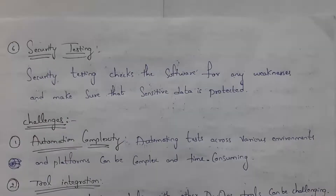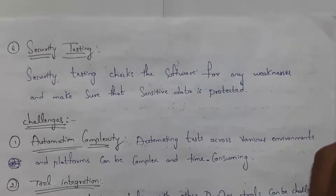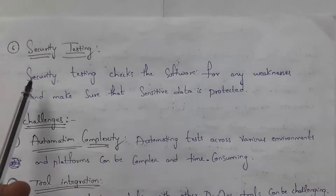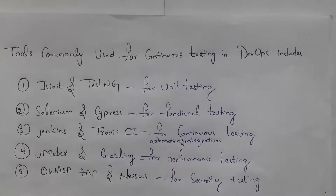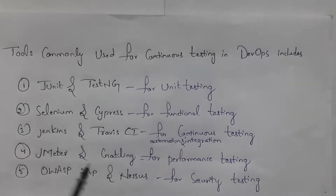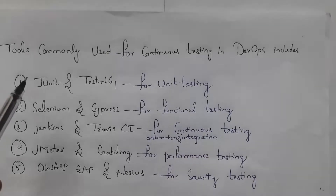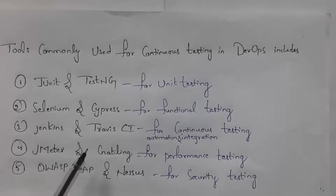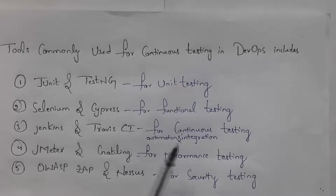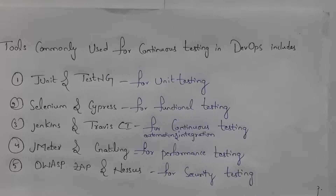The last type is security testing. After developing software, it is given to hackers to attempt to hack it — if there is any weakness, the hacker can exploit it. Security testing checks the software for any weaknesses and makes sure that sensitive data is protected. Tools used in DevOps include JUnit and TestNG for unit testing, Selenium and Cypress for functional testing, Jenkins and Travis CI for continuous integration and automation testing, JMeter and Gatling for performance testing, and OWASP and Nessus for security testing.